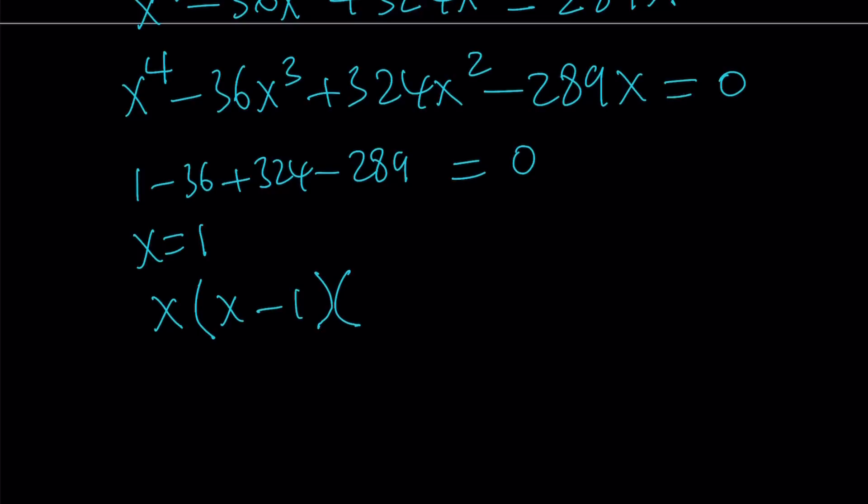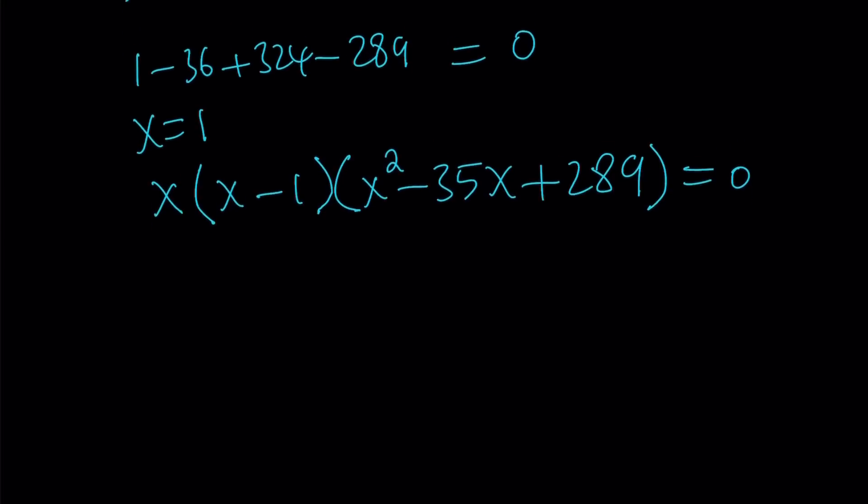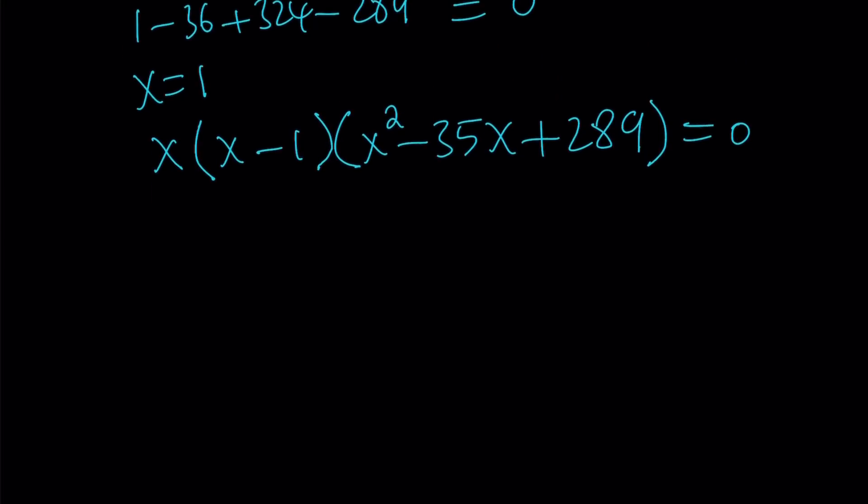The other factor is going to be quadratic, and that is going to be x squared minus 35x plus 289 equals 0. Now it's not hard to find once you know that x and x minus 1 are factors. The rest is fairly easy, actually.